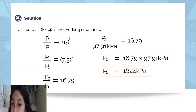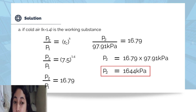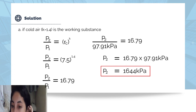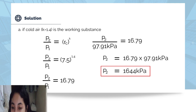To find the pressure with cold air as the working substance, we use P2 over P1 equals the compression ratio raised to K. Substituting: 7.5 raised to 1.4 equals 16.79. Then P2 equals 16.79 times 97.91 kilopascals, which equals 1,644 kilopascals. Using cold air, the pressure at the end of compression is 1,644 kilopascals.